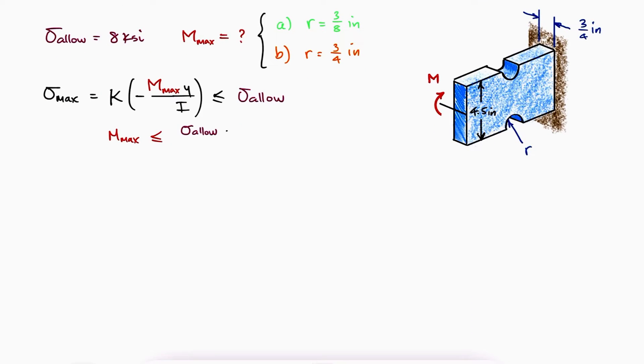Therefore, the maximum moment can be found if we find the distance from the neutral axis to where the maximum tensile stress is found. Since we are comparing this stress to a positive value of the maximum allowable stress, the second moment of area I, and the stress concentration factor K.